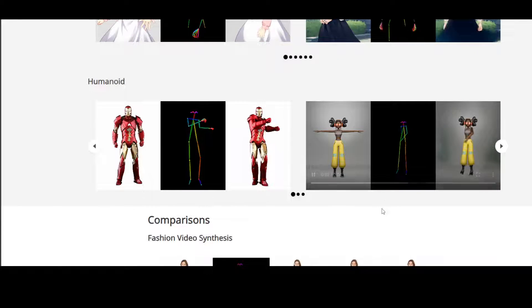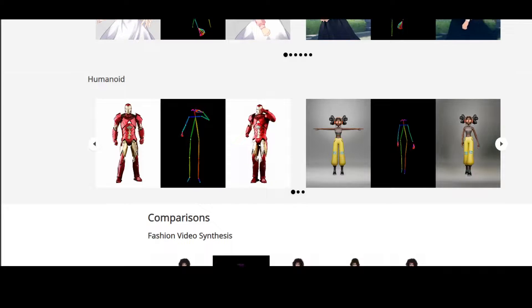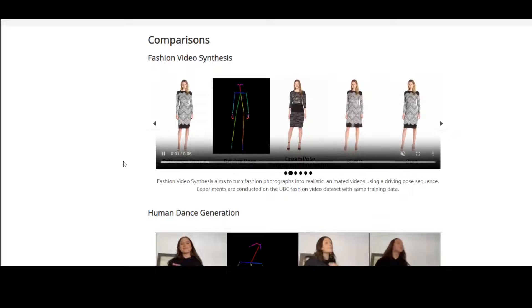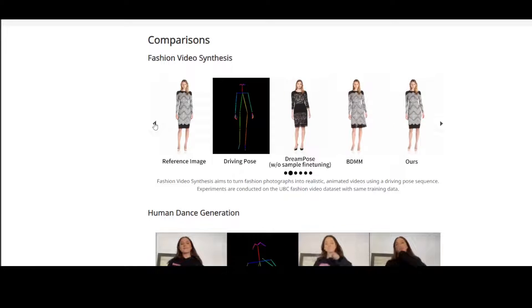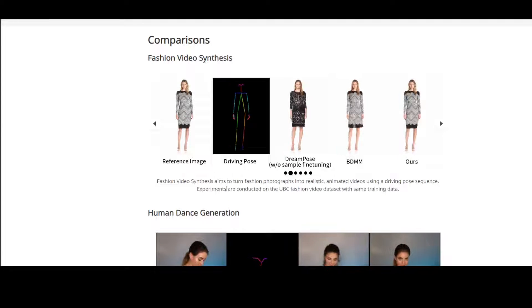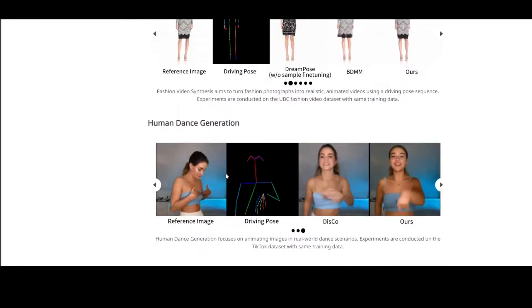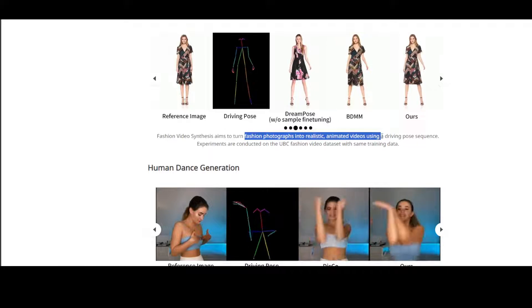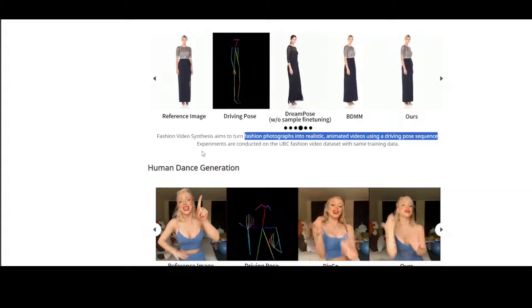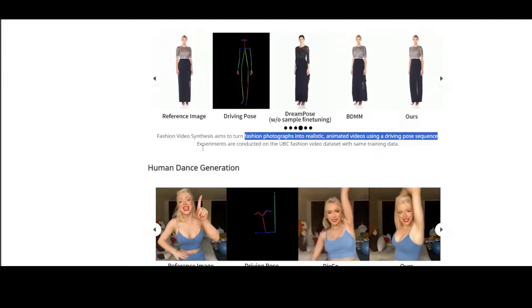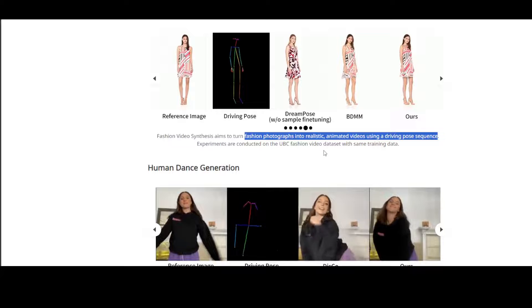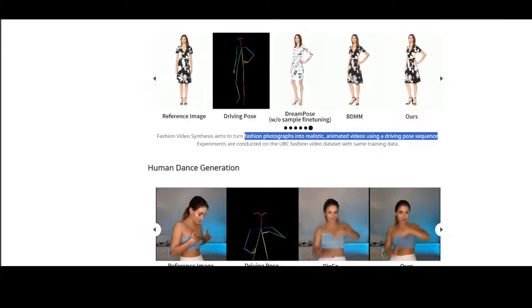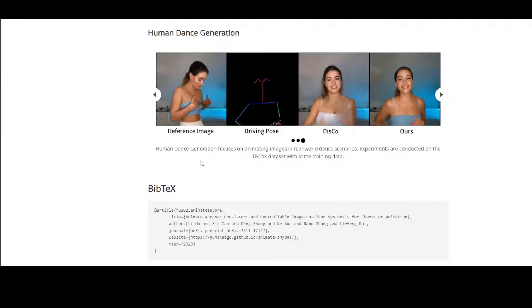And if you scroll down they have a lot of examples on their project page and I will drop the link in video's description too. For instance if you check out this one they are doing fashion video synthesis here, where they turn fashion photographs into realistic animated videos using the driving pose sequence. They are also telling us that experiments are conducted on the UBC fashion video dataset with same training data. And similarly there is some human dance generation with different scenarios.